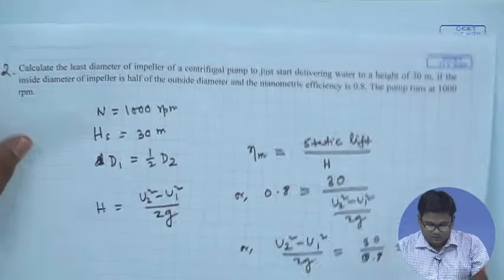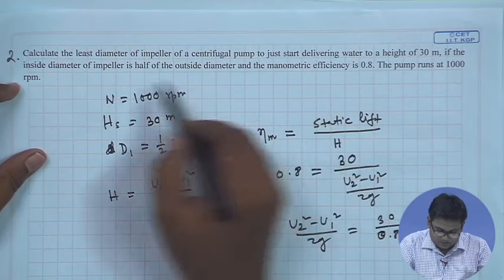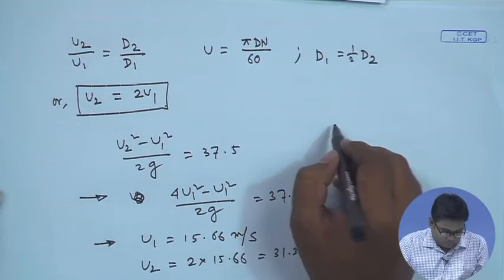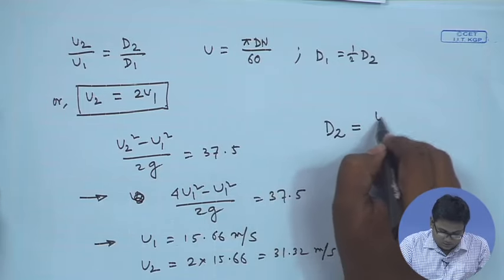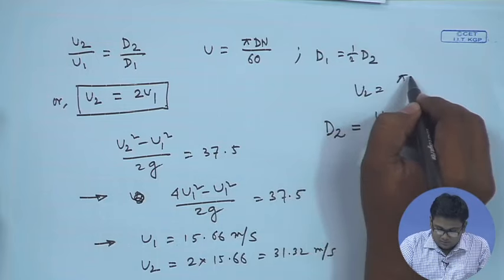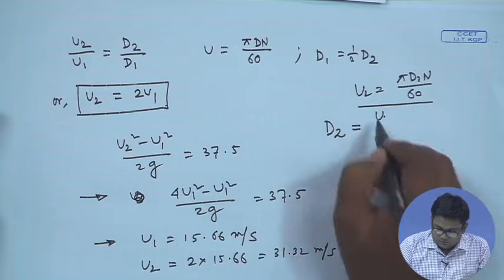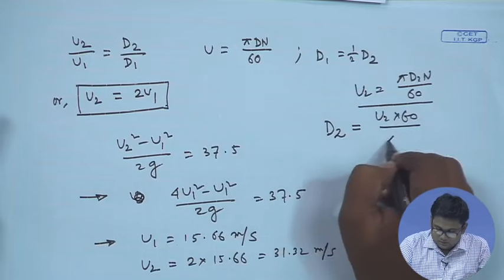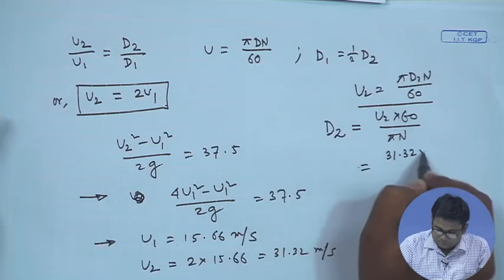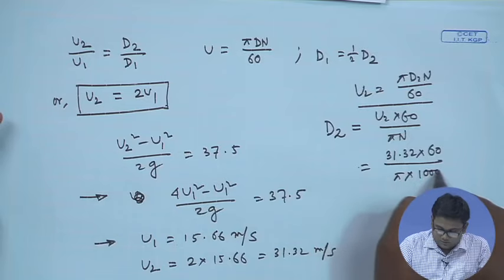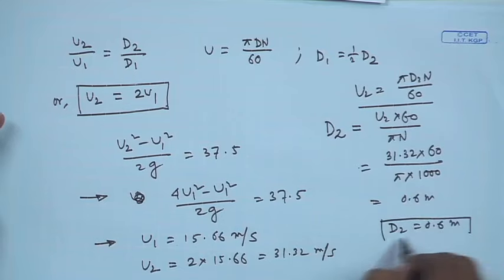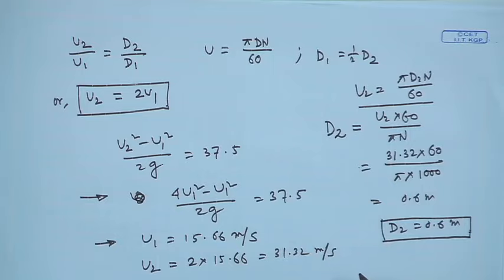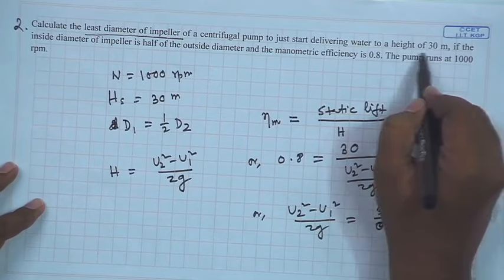The outer impeller diameter is found from u2 = π D2 n / 60, so D2 = u2 × 60 / (π × n) = 31.32 × 60 / (π × 1000) = 0.6 m. This is the least outer diameter of the impeller required to deliver flow with a static lift of 30 m. With this, I am ending today's lecture. Thank you.